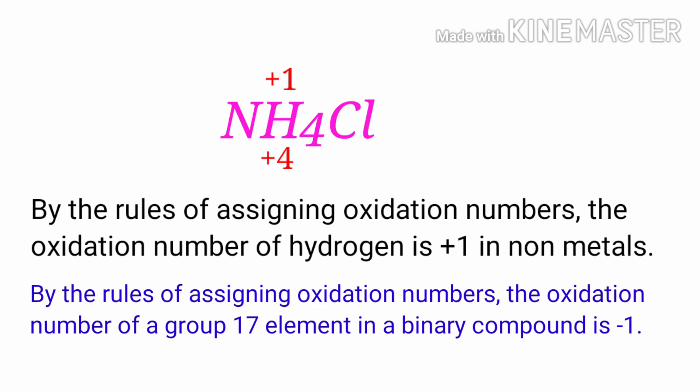By the rules of assigning oxidation numbers, the oxidation number of a group 17 element in a binary compound is minus one. Chlorine is a group 17 element, so the oxidation number of chlorine is minus one.